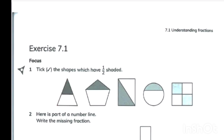According to this, only three and five are half shaded. The rest have only two parts but they are not half.